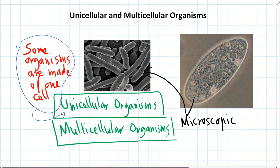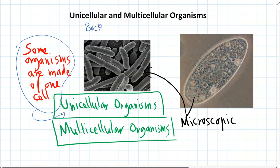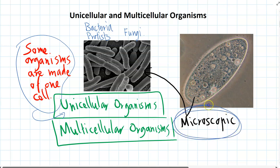Uni means one, so unicellular organisms are things like bacteria, some protists, and some fungi. Because cells are so small, they are definitely microscopic. Any organism that's microscopic you can't see — you need a microscope to be able to see it.